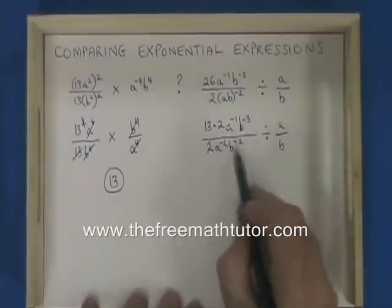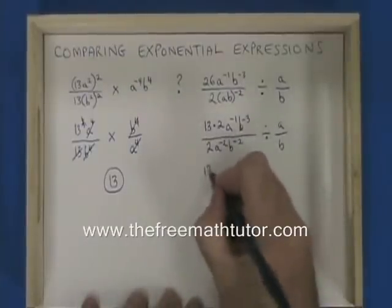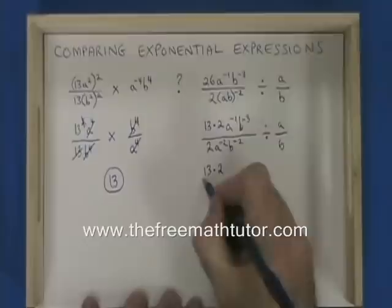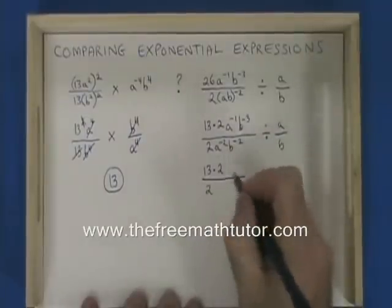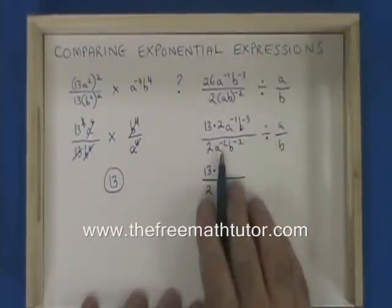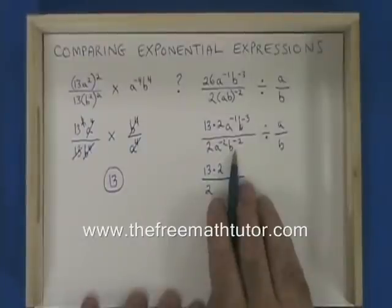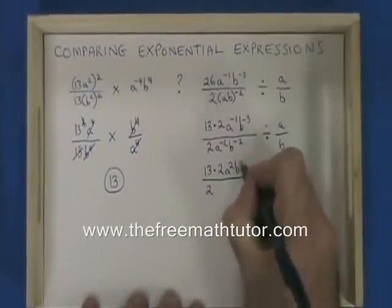Then, I'm going to get rid of these negative exponents. So I'm going to have 13 times 2 on the top, 2 on the bottom. The a to the negative 2 and b to the negative 2 on the bottom move to the top, and I have a squared, b squared.